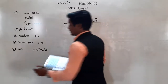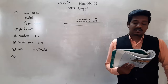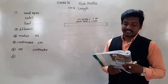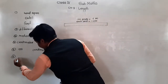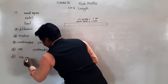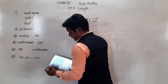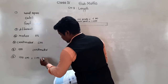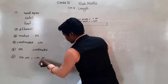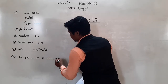So we say: 100 centimeter is equal to 1 meter, or 1 meter is equal to 100 centimeter.